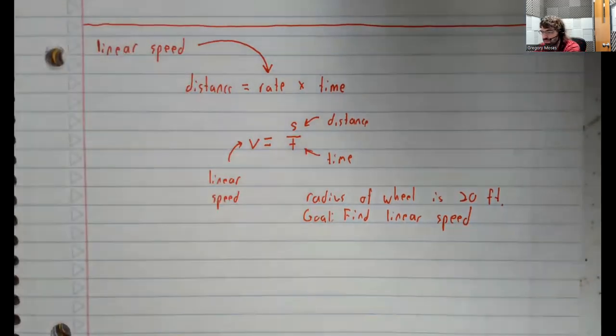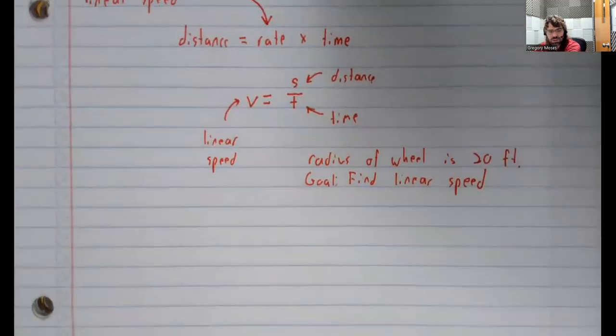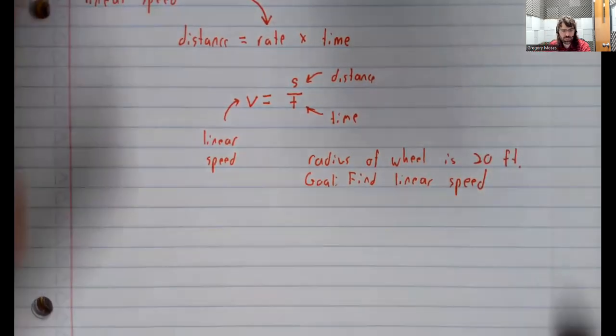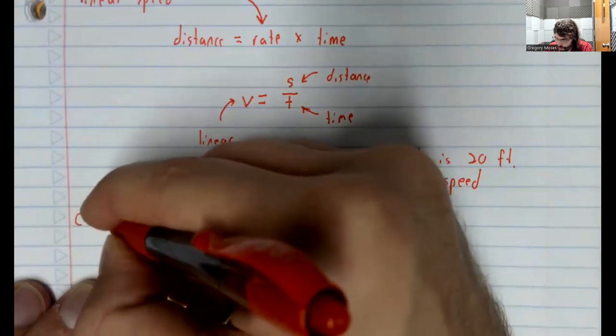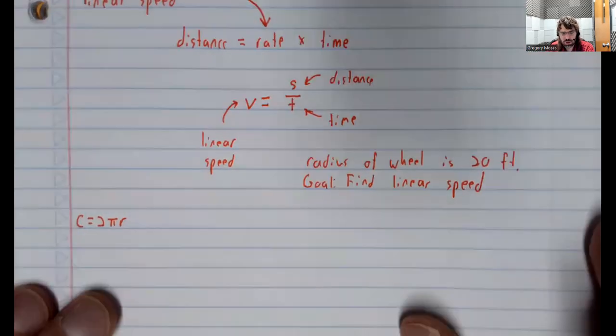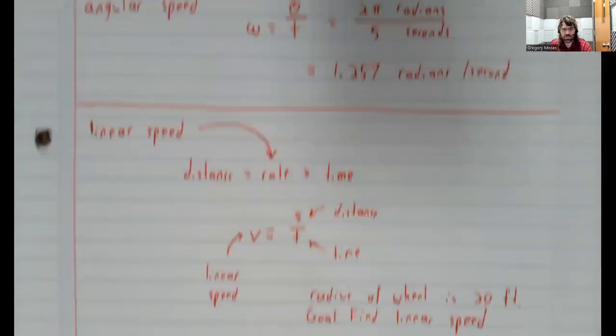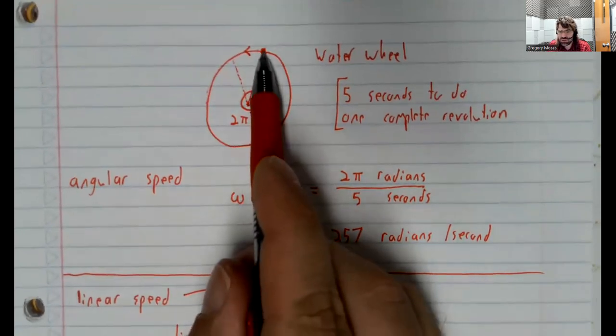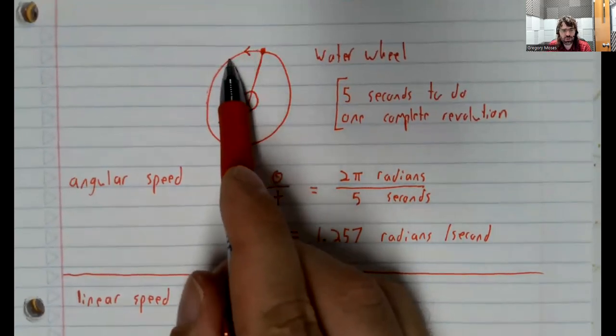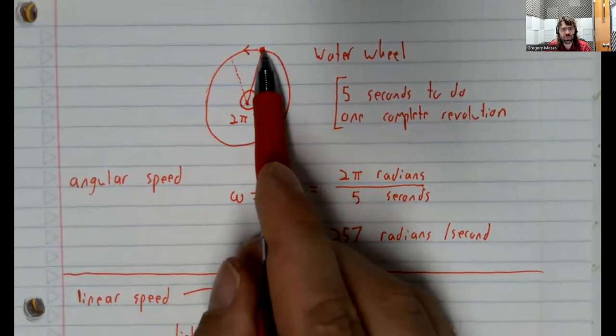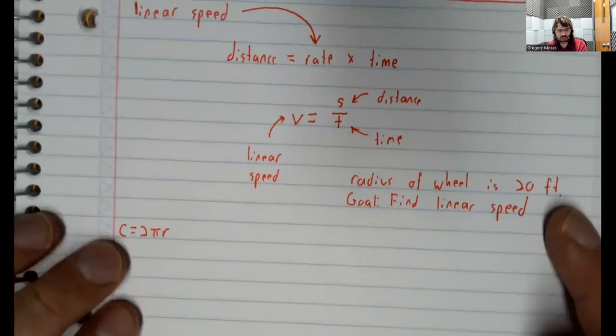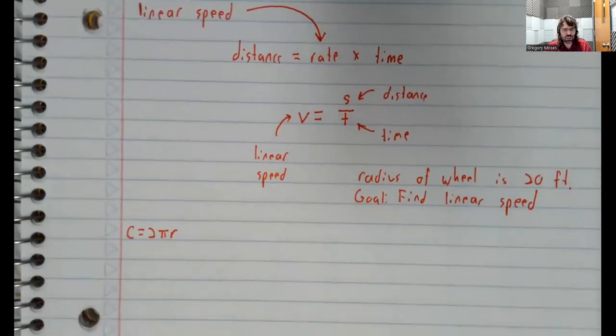We need the circumference formula. Because if we start here and travel one full revolution over this five-second interval, we've traced out the circumference of the circle. And the circumference of a circle is two times pi times the radius.